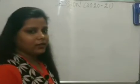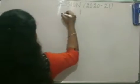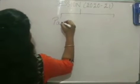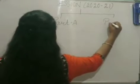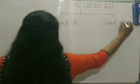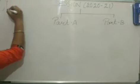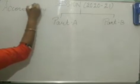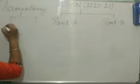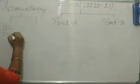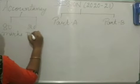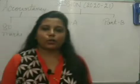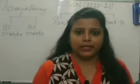The session 2020-21 is divided into two parts — Part A and Part B. In the same way, the accountancy subject is divided into two parts: the first is 80 marks and the other is 20 marks.